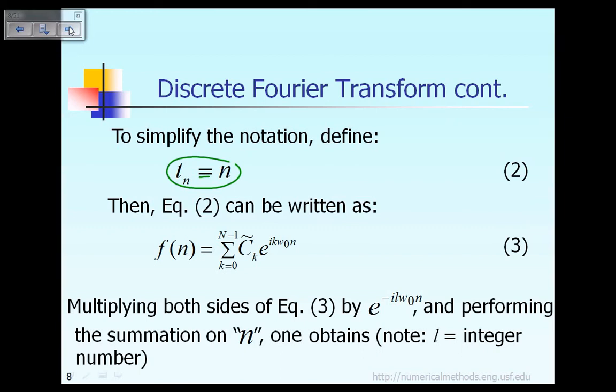Okay. So with that notation then the previous equation, instead of writing t sub n we just write it as n. And then on the right hand side instead of t sub n we just write it as n. So the formula now becomes a little bit simpler.